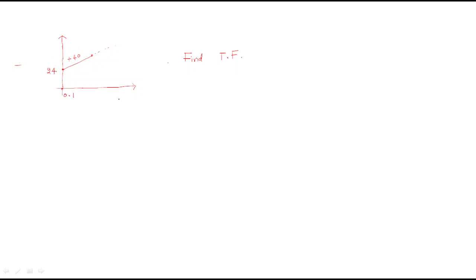Hello everyone. Today we'll discuss some more problems. Here the problem is: at ω=0.1 we have 24 dB and it reaches to +40 dB/decade. Find the transfer function. As we discussed in the last session, whenever the initial slope at ω=0.1 gives a given magnitude and then becomes +40, the slope of +40 dB/decade means two zeros are available. So we can write the transfer function G(s) = K·s².